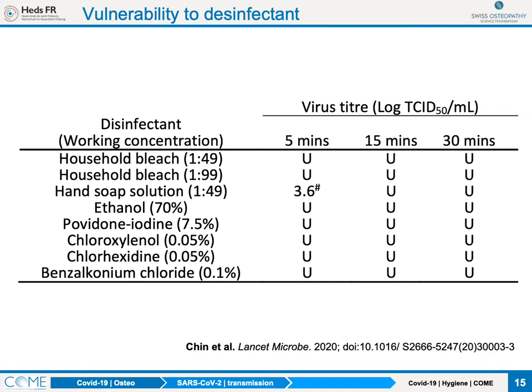Now let's look at how our virus behaves when exposed to usual disinfectants. There's good news: it is very vulnerable to any form of disinfectant, because the lipid surface is easily dissolved by soap and the glycoprotein bindings are quite fragile to any disinfectant — from bleach to soap to ethanol. We recommend using ethanol as a hydroalcoholic solution, which is easy to use and allows you to disinfect your hands when touching instruments during care. Soap also works extremely well, so patients might also wash their hands with soap before starting a consultation.